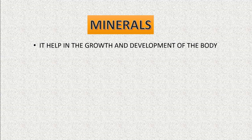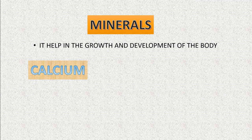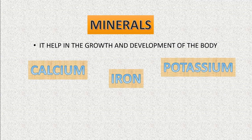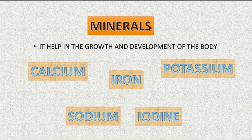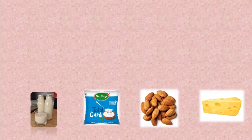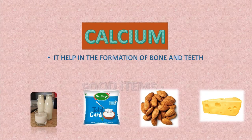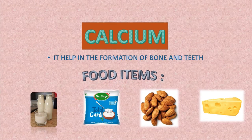Next is minerals. Minerals help in the growth and development of the body. Calcium, iron, potassium, iodine and sodium are some examples of minerals. Let us discuss some types of minerals that are very useful for our body. First is calcium — calcium helps in the formation of bones.